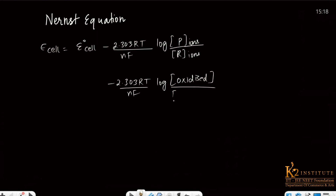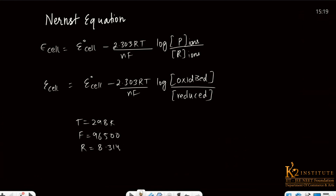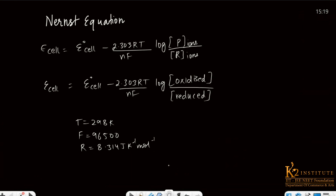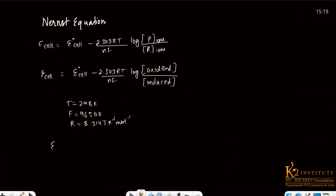That is E cell in its reduced form. We further said that if temperature is 298 Kelvin, F value is 96500, and R is 8.314 Joule Kelvin⁻¹ mol⁻¹, then this equation simplifies to: E cell equals E⁰ cell minus 0.0591 upon N, log concentration of oxidized form upon the reduced form.